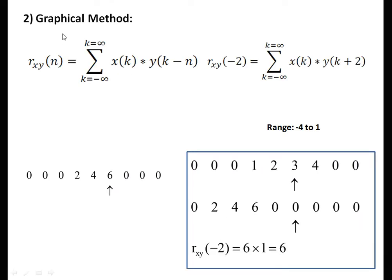Graphical method — this is the simplest method. We just need to remember the formula and the range. The formula is x(k) into y(k minus n), where x is fixed and y is moving. The range is from minus 2 to 3. First, for n = minus 2, we get x(k) into y(k plus 2). We shift the y signal two units to the right (advanced version). The signal y = {2, 4, 6} is shifted right by 2 units.